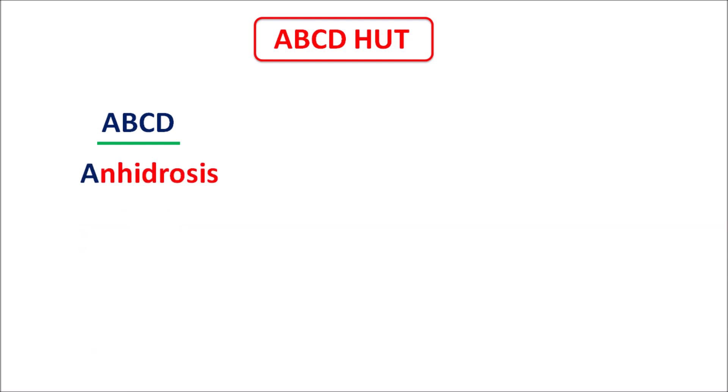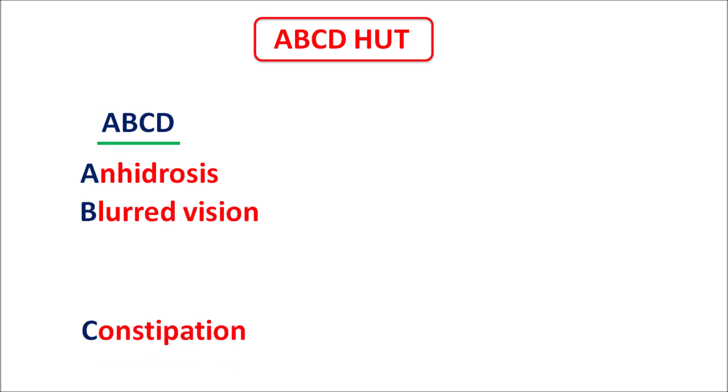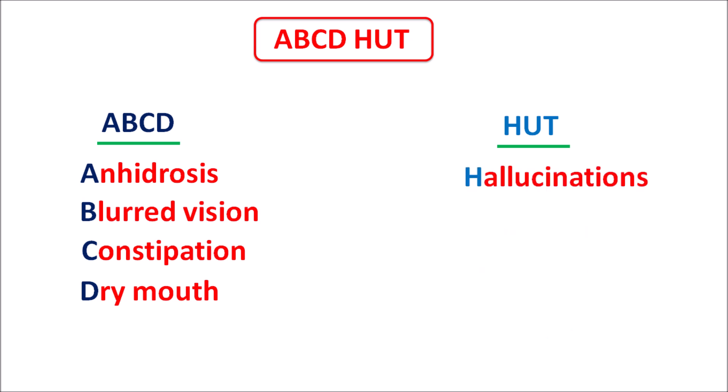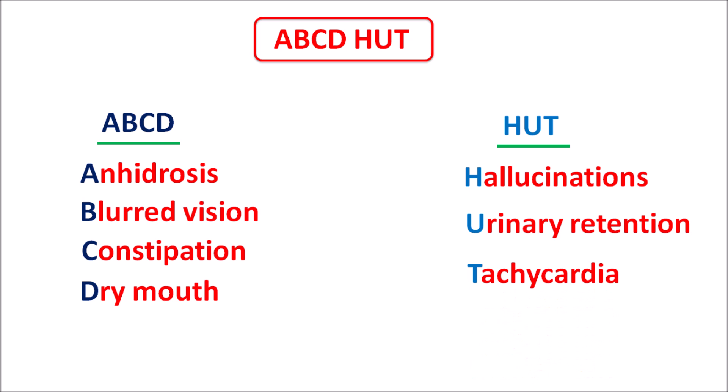We can remember the side effects of anticholinergics with the simple code: ABCD HEART. A indicates anhydrosis, B is blurred vision, C is constipation, D is dry mouth. In HEART: H is hallucinations, U is urinary retention, and T is tachycardia.